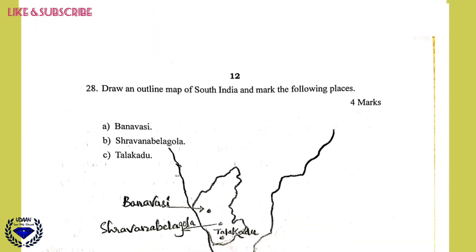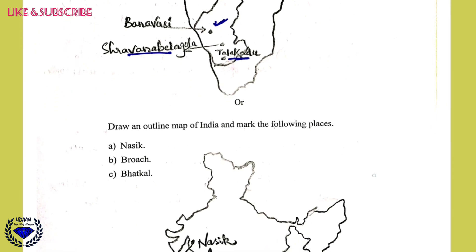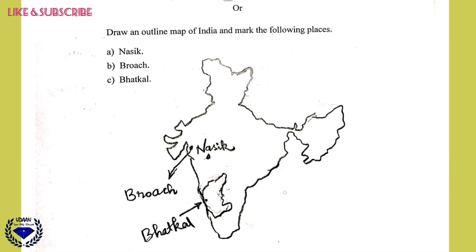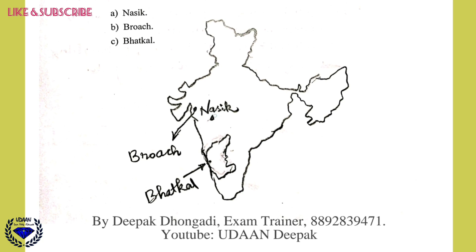Question 28 is a map-based question. Draw an outline map of South India and mark the following places: Banwasi, Shravana Belagula, and Talcadu — which is in the south of Karnataka. The alternate question asks to draw an outline map of India and mark: Nasik, which is in Maharashtra; Broach, which is near the Gujarat border; and Bhatkal, which is in Karnataka. I hope you understood all. Kindly like, share, and subscribe. Thank you.